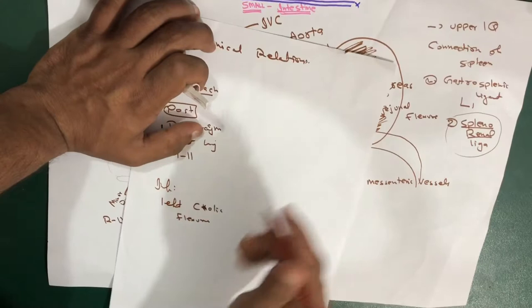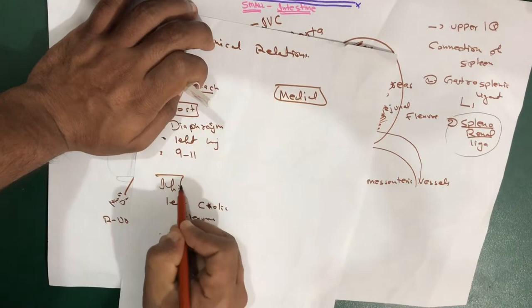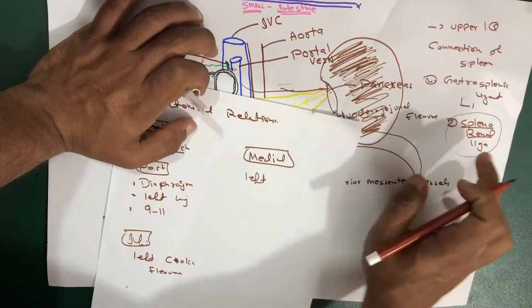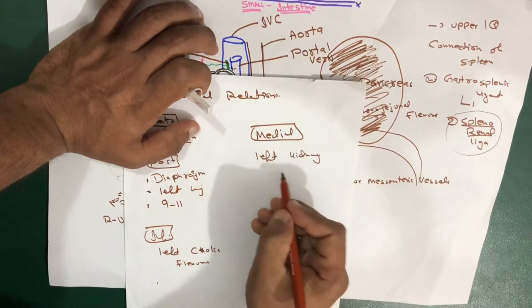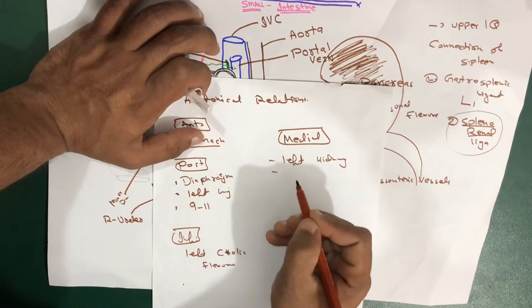On the medial side, we have the left kidney, because the splenorenal ligament is going to attach both of them. And the second structure on the medial side is the tail of the pancreas — you can see the tail of the pancreas kind of extending into the hilum of the spleen.